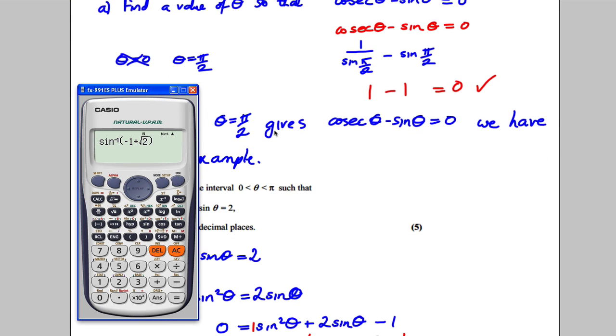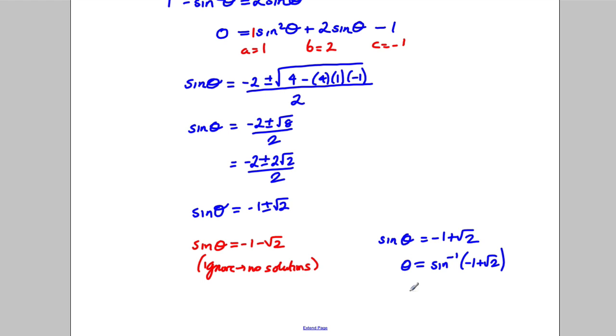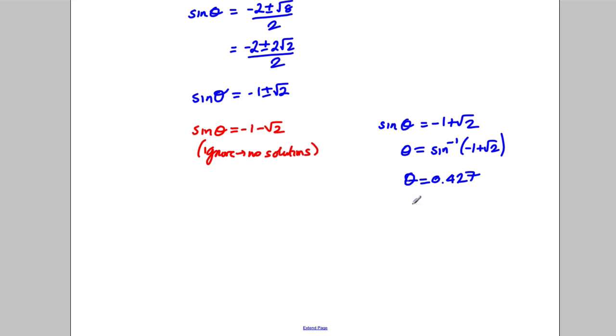And we're in degrees mode. Do we want to be in degrees mode? Check the question. We want to be between zero and π. So we don't. So I'm going to press equals and then what I'm going to do is go to radians mode and press equals again. So 0.427. So θ is 0.427. Now we want to be to two decimal places. So θ is 0.43.